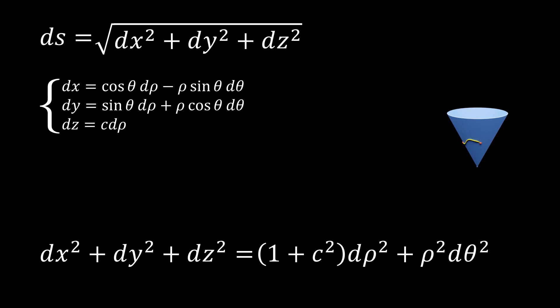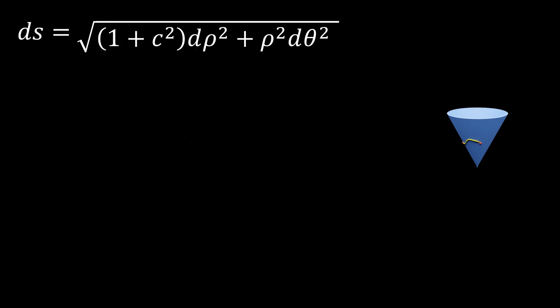We can then put this into the square root and factor out a d rho squared, which will come out of the square root as just d rho. Here, theta prime is just d theta by d rho.